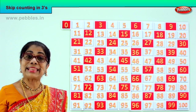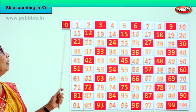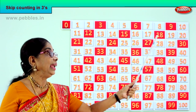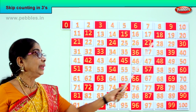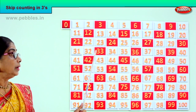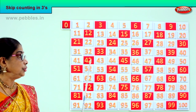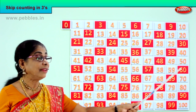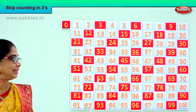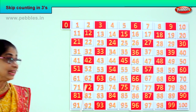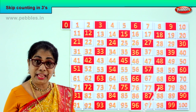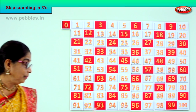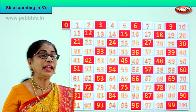Let's look at the pattern in skip counting in threes. Say with me: 0, 3, 6, 9, 12, 15, 18, 21, 24, 27, 30, 33, 36, 39, 42, 45, 48, 51, 54, 57, 60, 63, 66, 69, 72, 75, 78, 81, 84, 87, 90, 93, 96, 99. Look carefully at the pattern.